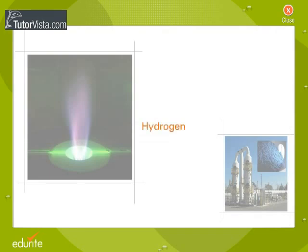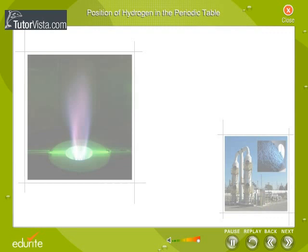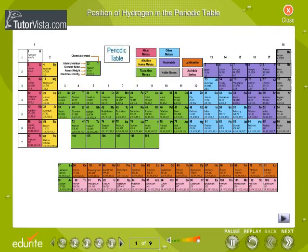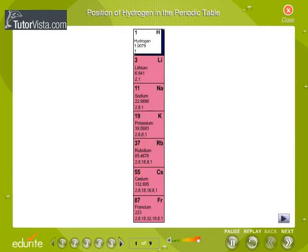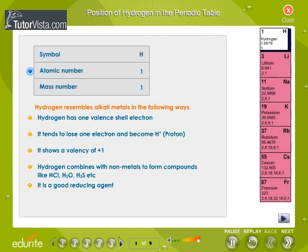Hydrogen. Position of Hydrogen in the Periodic Table. Hydrogen with atomic number 1 and mass number 1 rightly deserves the first position in the periodic table.